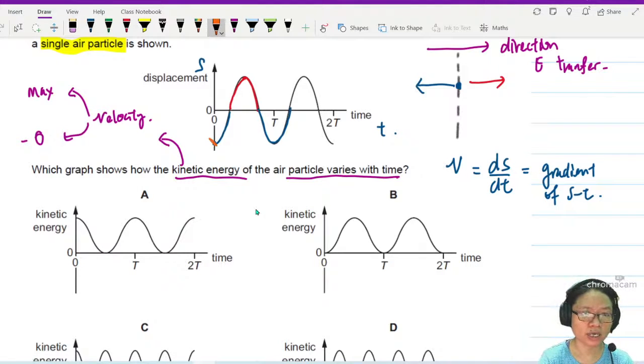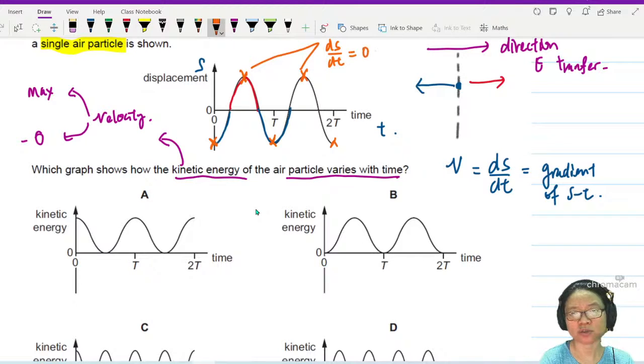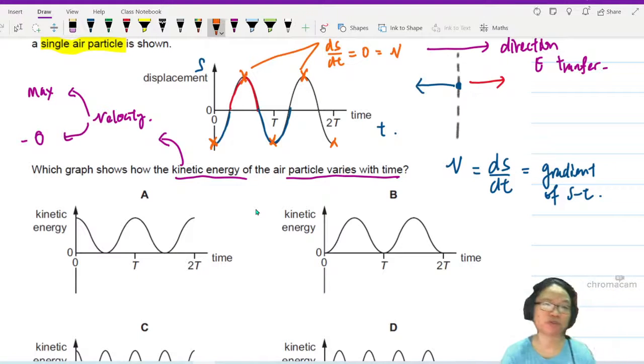My friends, the gradient is zero here, all the turning points here, here, here, and here. So all these points, ds dt equal to zero, which is equal to V. So there have to be five different points where the KE is zero.